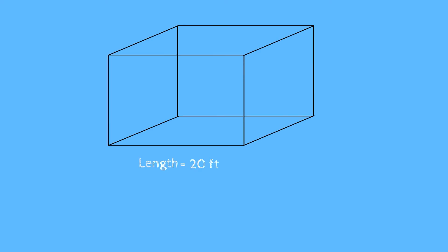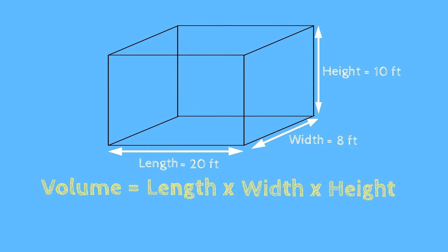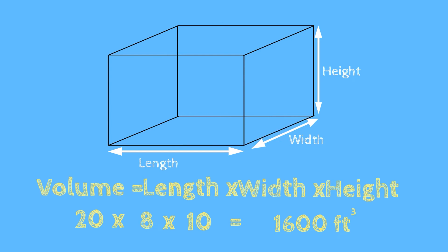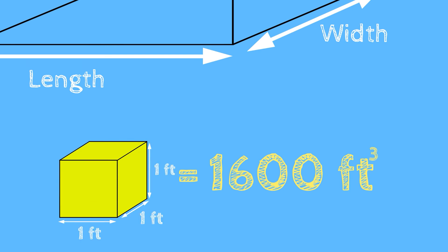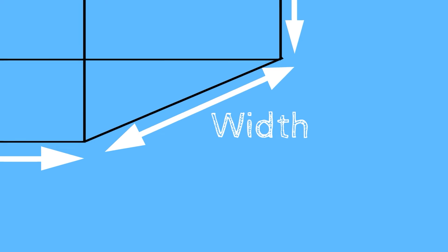Let's say you're asked to find the volume of a prism that has a length of 20 feet, a width of 8 feet, and a height of 10 feet. To find the volume, you need to use the formula length times width times height. If we were to multiply 20 feet times 8 feet times 10 feet, we would get 1,600 feet cubed. This means 1,600 cubes that have an edge length of 1 foot fit inside the rectangular prism.